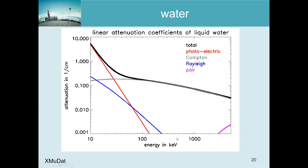Here the interactions are plotted as a function of energy for water. The x-axis is energy in keV on a log scale, and the y-axis is attenuation in per centimeter, representing the probability of interaction per centimeter. The black curve is total attenuation - at low energy it is much higher than at high energy, a factor of 100 difference. The black curve is explained by the photoelectric effect (red curve) at very low energies, and Compton scatter (gray curve) at higher energies.